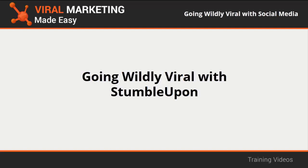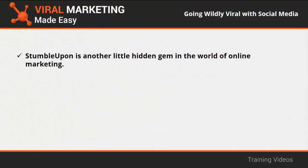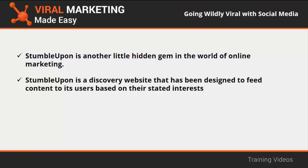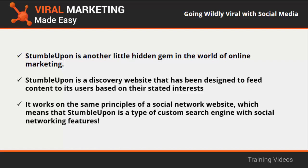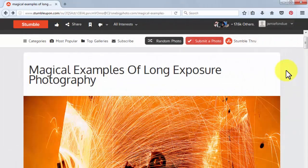StumbleUpon is another hidden gem in the world of online marketing, often misunderstood by marketers as a tool to pass time. StumbleUpon is a discovery website designed to feed content to its users based on their stated interests when they sign up. It works on the same principles of a social network, making it a custom search engine with social networking features. Content on StumbleUpon goes viral the same as it would on Facebook — photos and videos are shared by peer sourcing, meaning that if the content is great, the advertising comes for free.